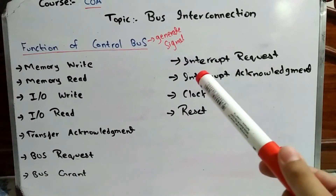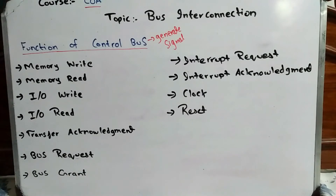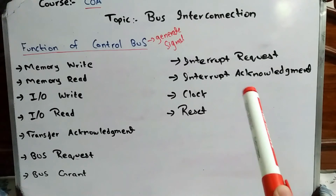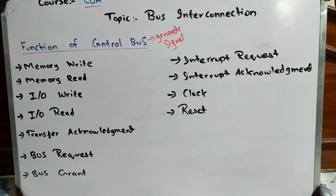The next function is interrupt request. An interrupt request signal is generated when a device requires CPU attention, and the control bus generates this signal. The next function is interrupt acknowledgement — when the CPU acknowledges the interrupt to the requesting device, the control bus generates the interrupt acknowledgement signal.